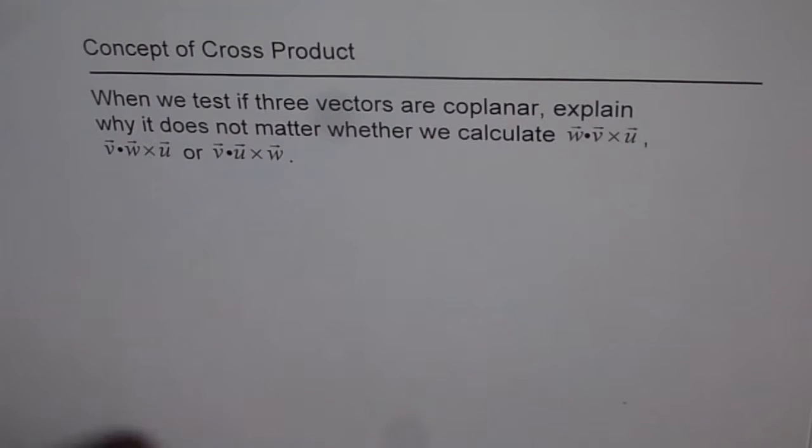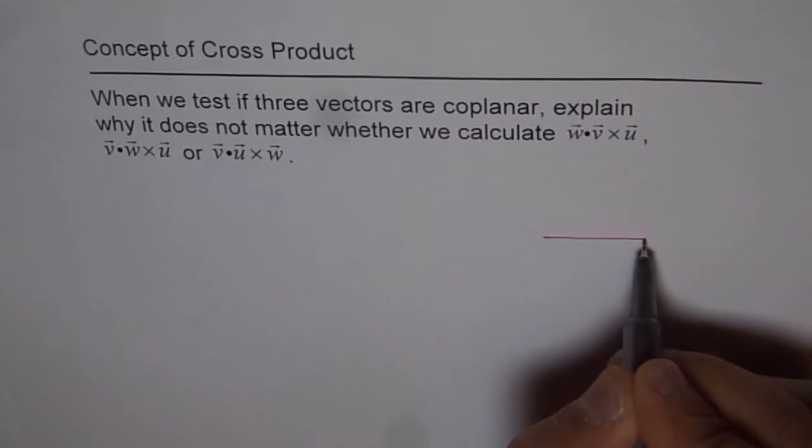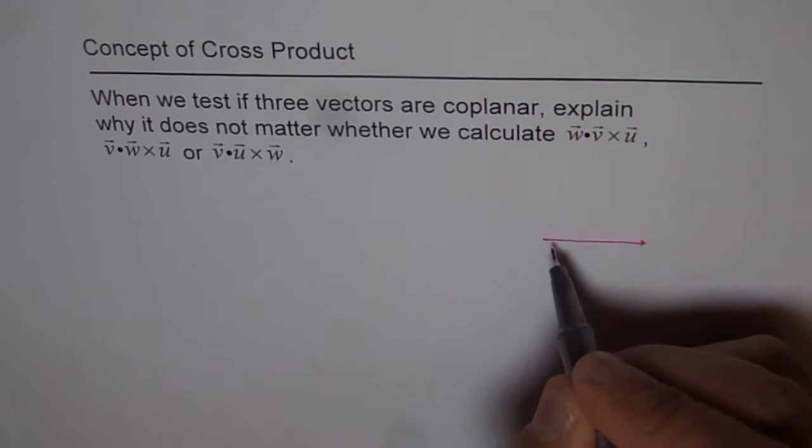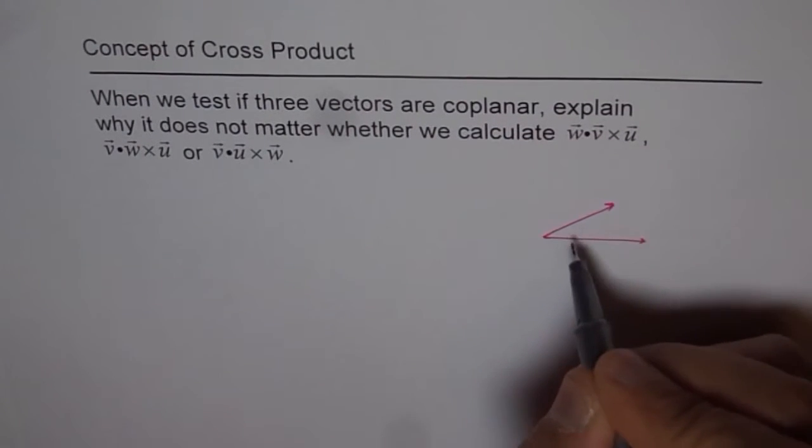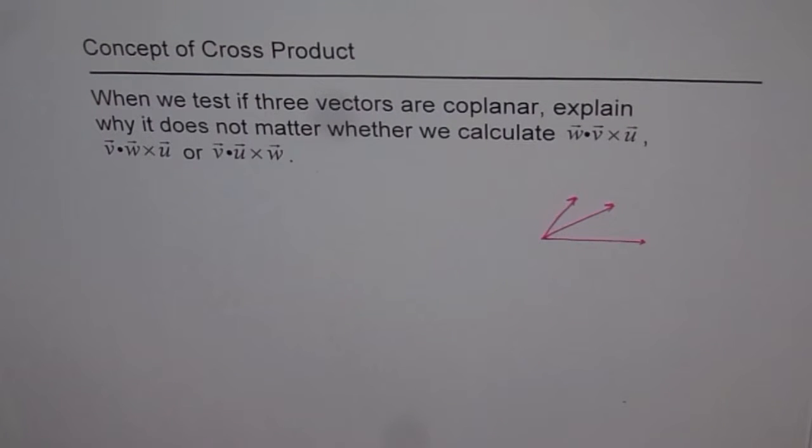Well, it's simple. Let's say we have three vectors on this plane. Let's say one vector is this, let's call it u, and let's call this as v, and then let's call this as w. Let's say we have these three vectors here.